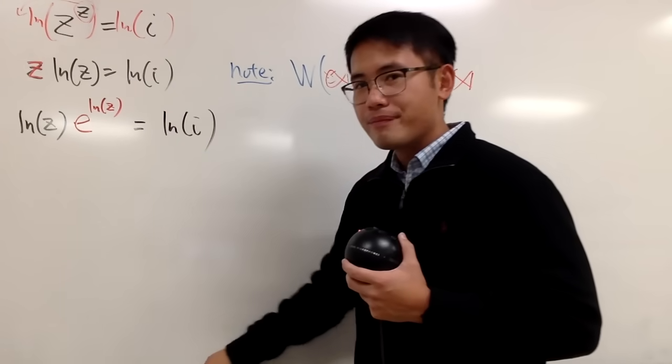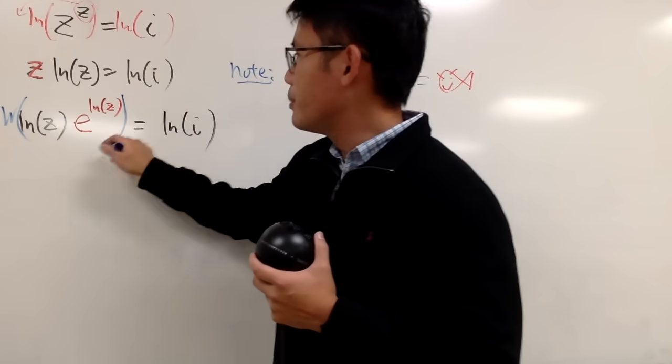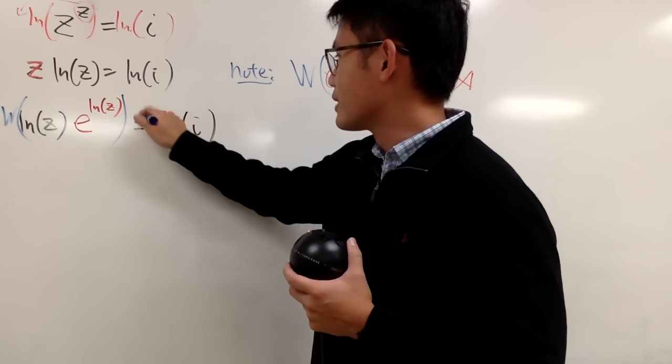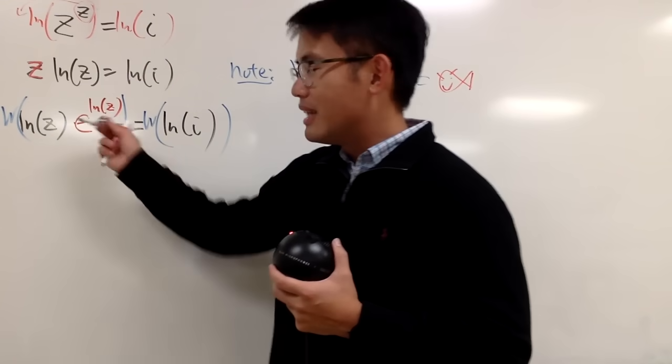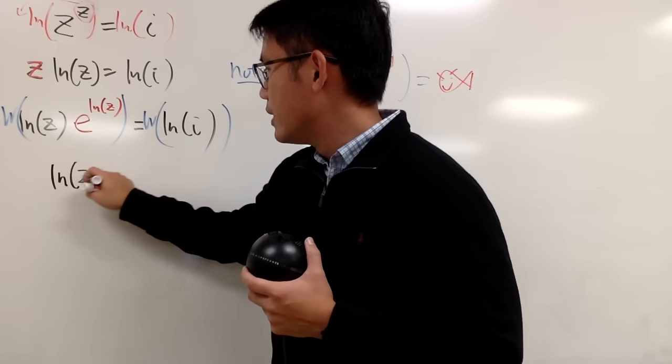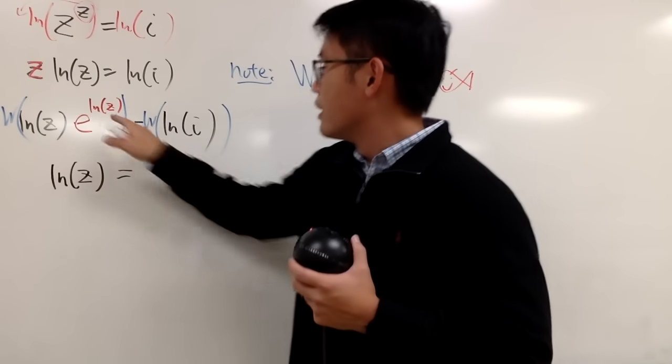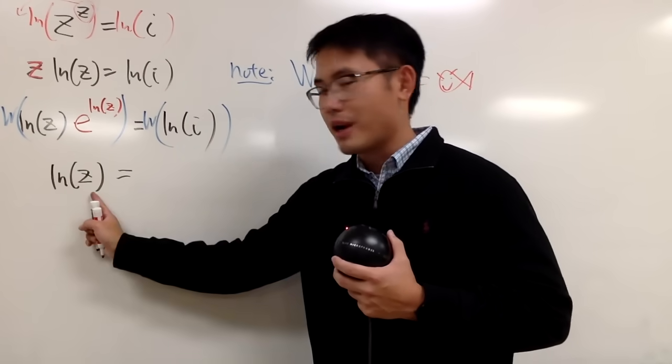And then, from here, yes, we will be taking the Lambert W function on both sides. So w there and w here, like this and like that. On the left-hand side, we get ln z. Remember, when these two are the same, you just get that back. So you have ln z right here.